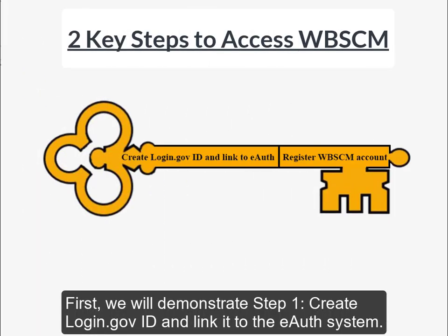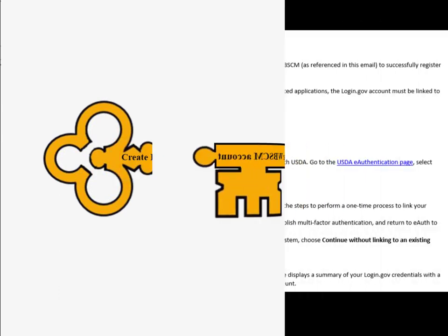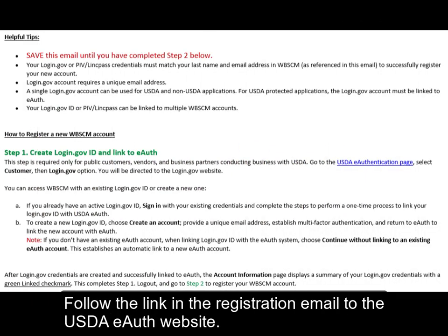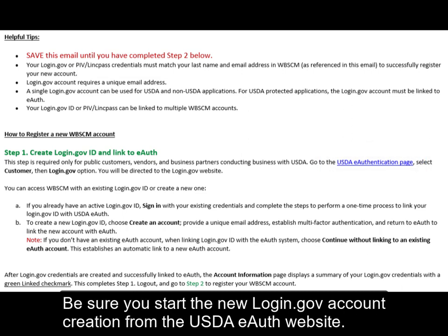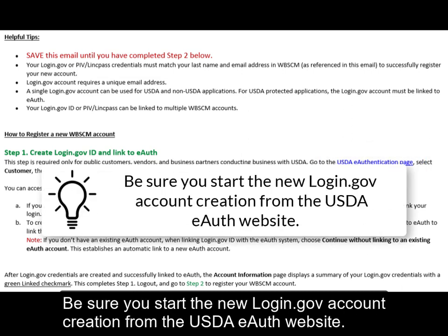Now let's go through the step-by-step process from beginning to end. First, we will demonstrate Step 1: Create login.gov ID and link it to the eAuthentication system. Follow the link in the registration email to the USDA eAuth website. Be sure you start the login.gov account creation from the USDA eAuth website.